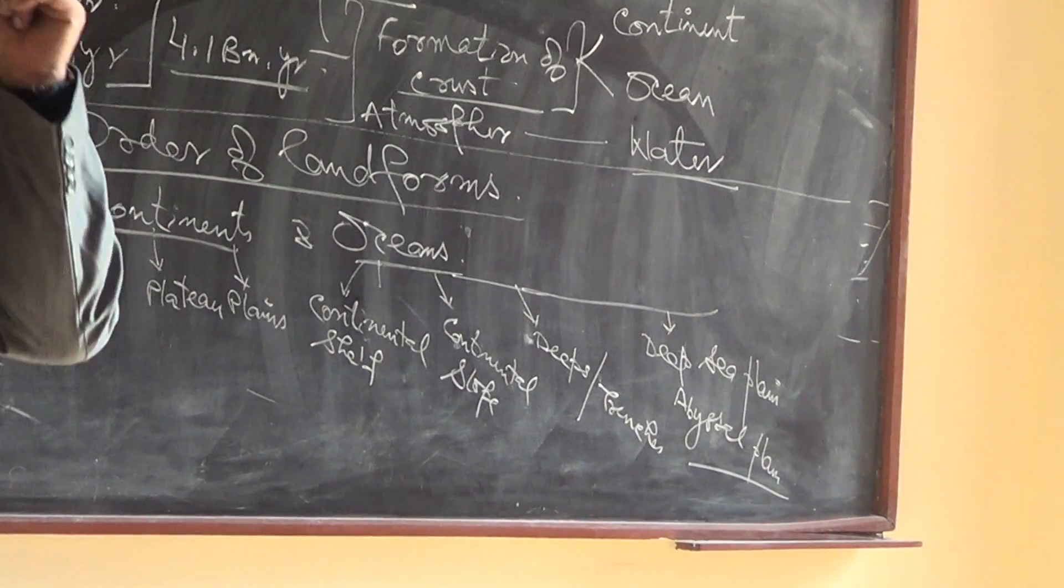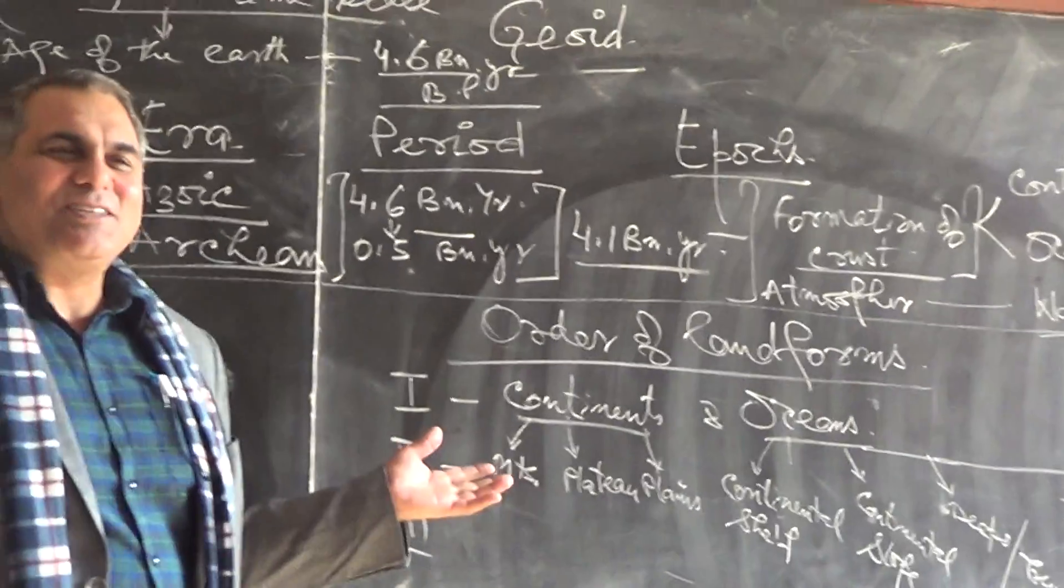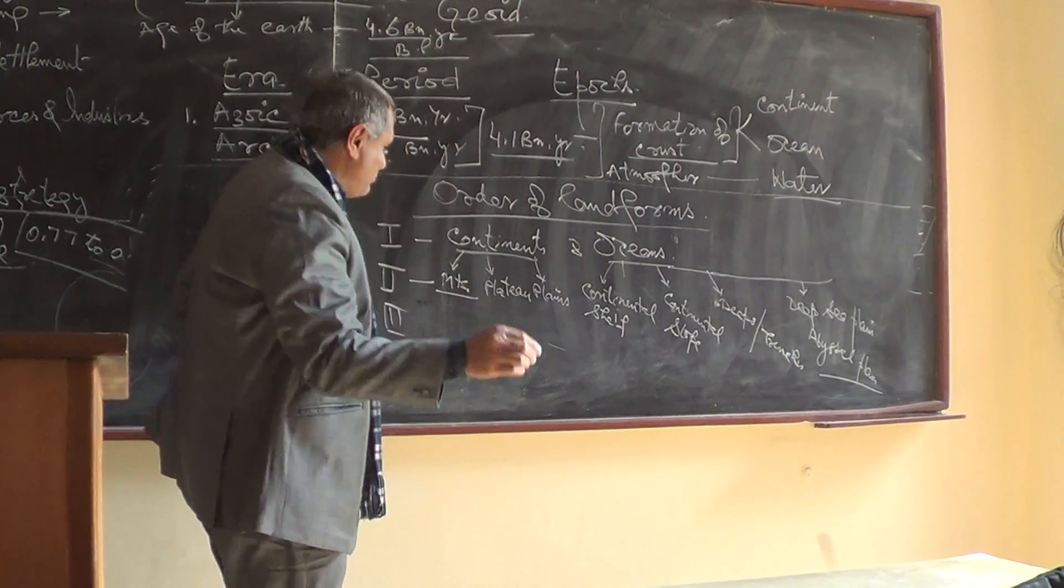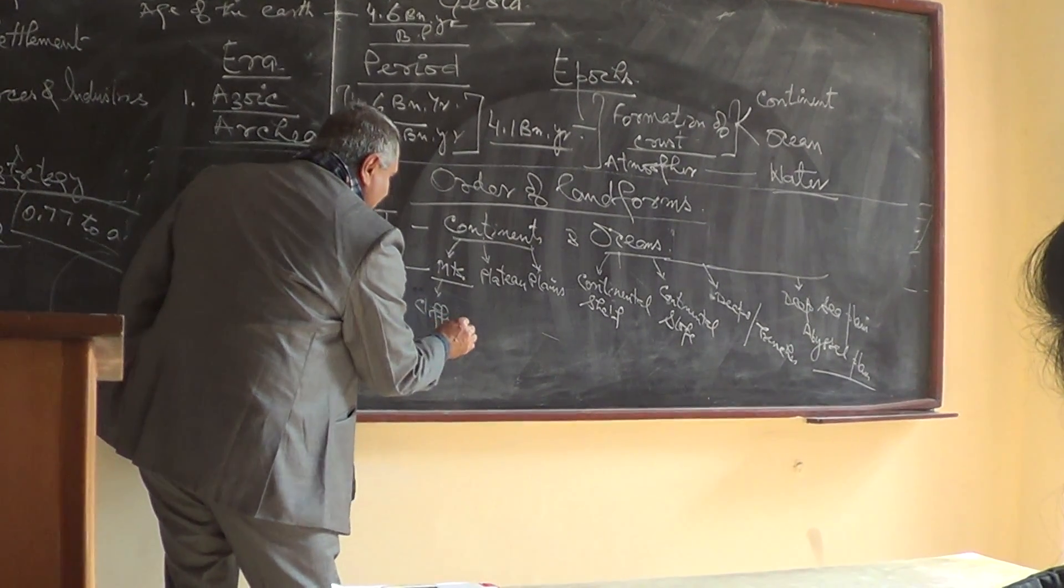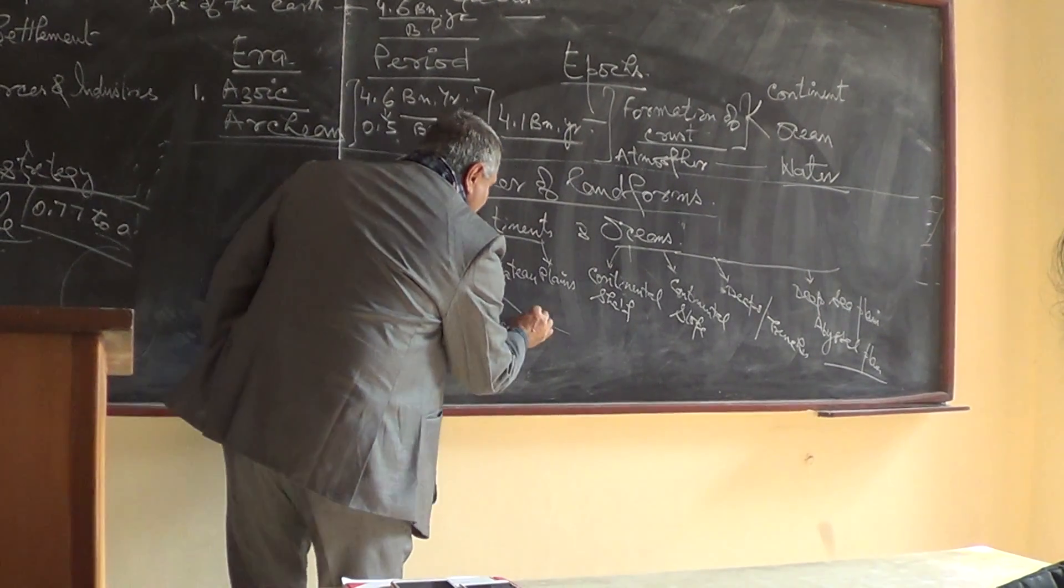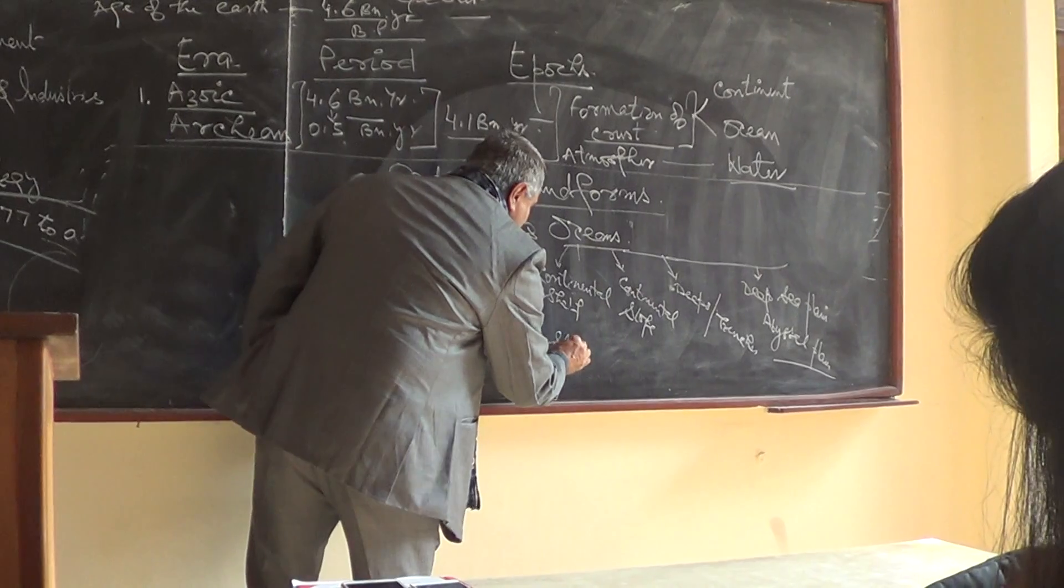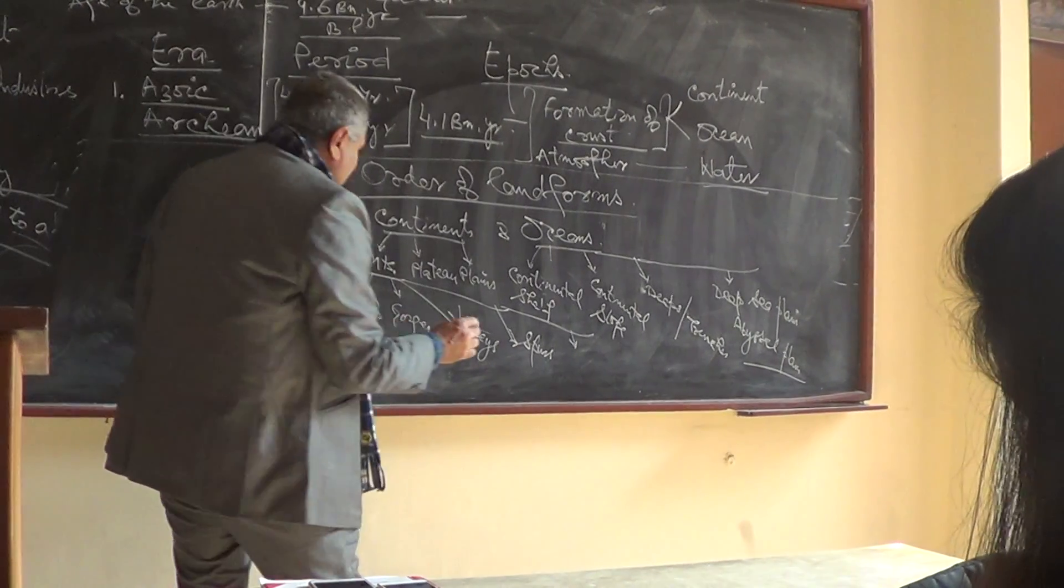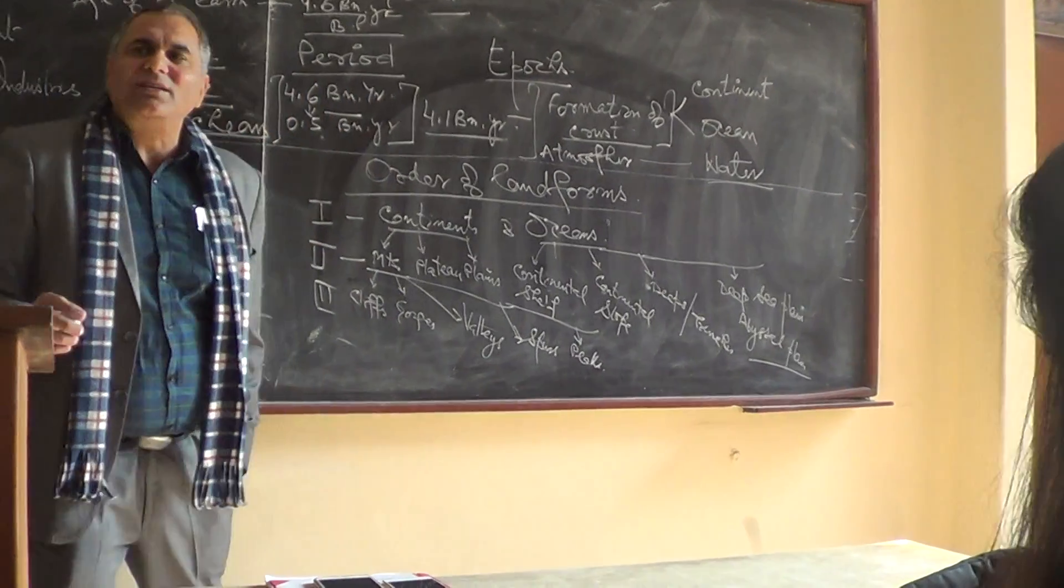Now what are the third order landforms? Like suppose this is the mountain. What are the relief features you have studied in the mountain? In mountains, you have the cliffs, you have the gorges, you have the valleys, you have the spurs, peaks. All these are the third order landforms.